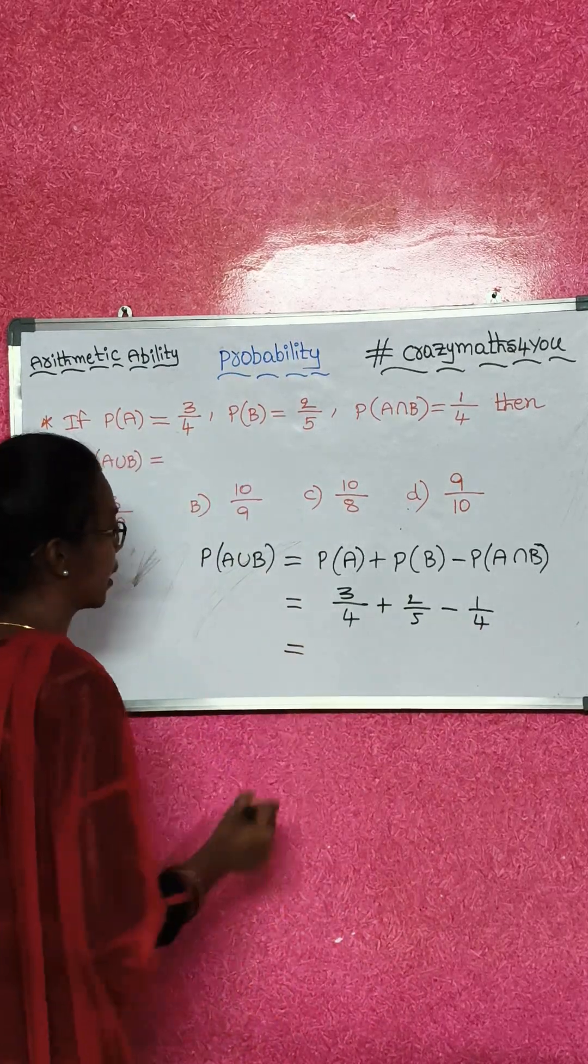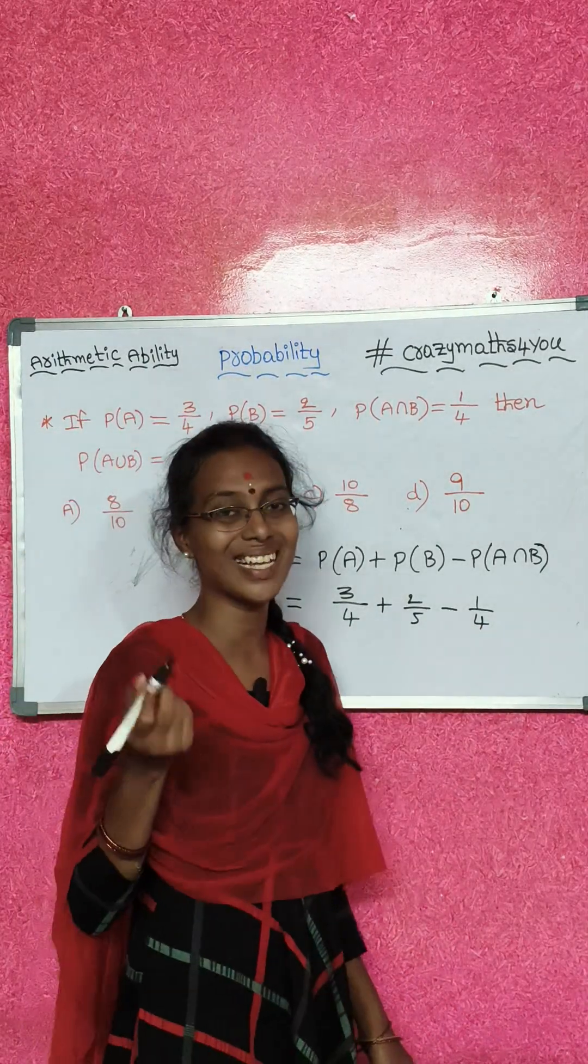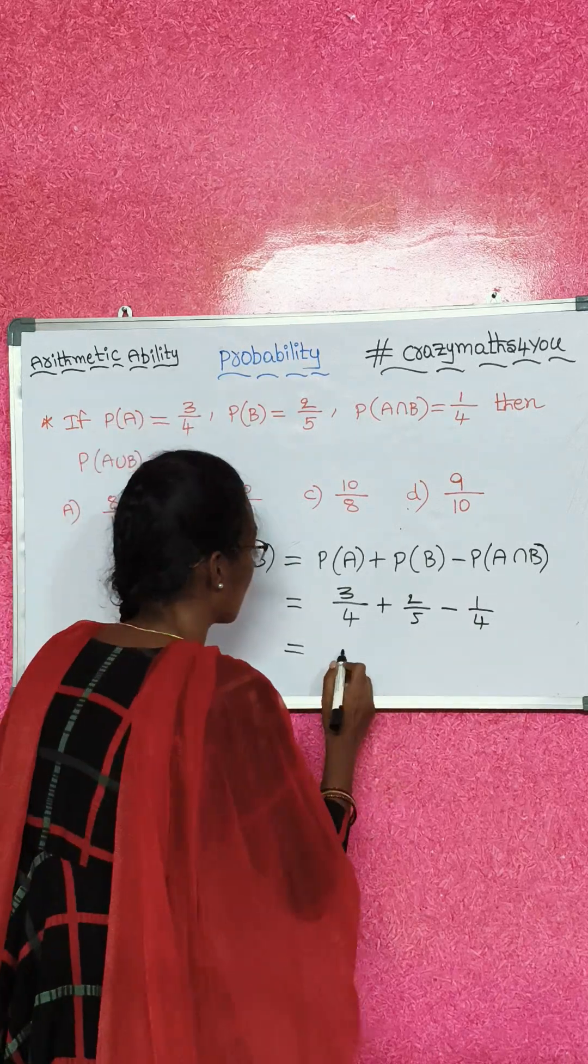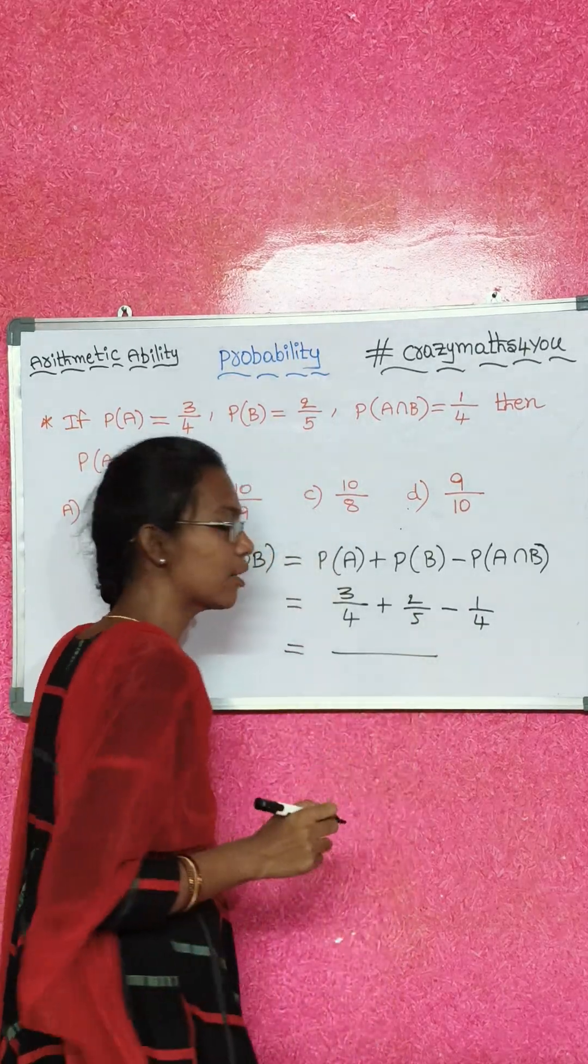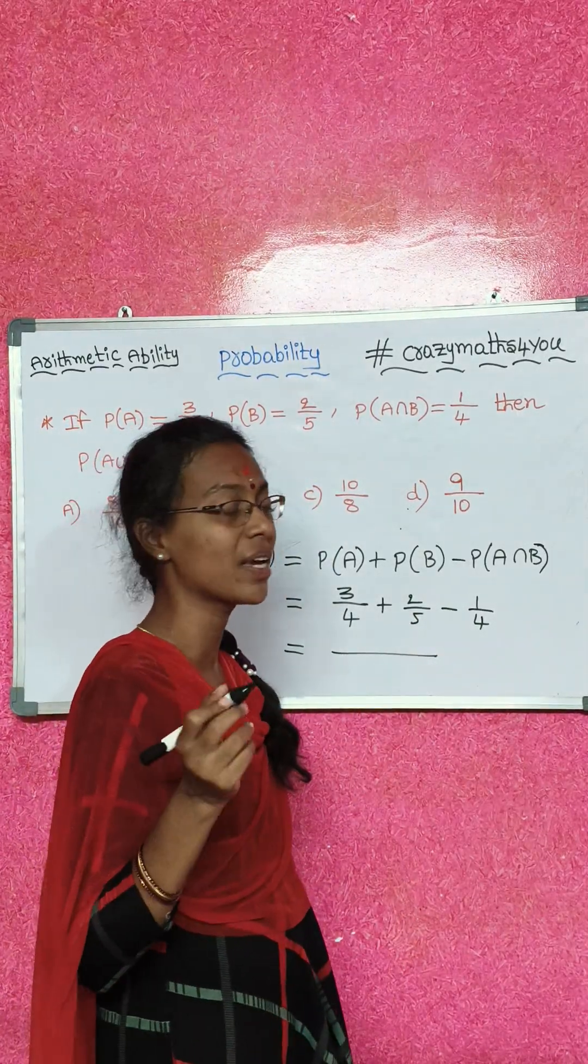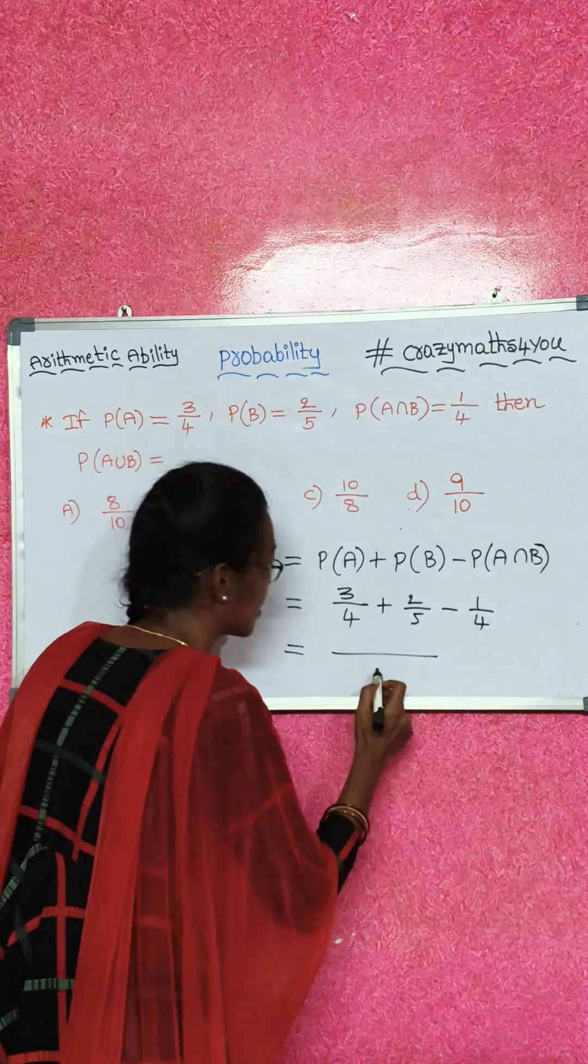Denominator same or different? Different: 4, 5, 4. Denominator is common, LCM of 4, 5. LCM is 20. Both are consecutive numbers. Consecutive numbers, LCM is product of the numbers. 4 times 5 is 20.